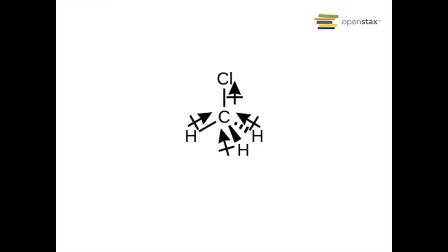Chloromethane is tetrahedral with some slightly polar carbon-hydrogen bonds that are more or less nonpolar, but then a much more polar carbon-chlorine bond. When you add all these dipoles together, you end up with an overall dipole moment, and this is an overall polar molecule.